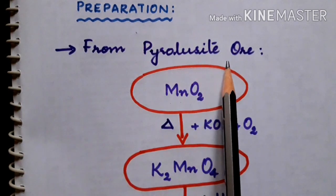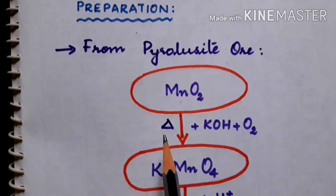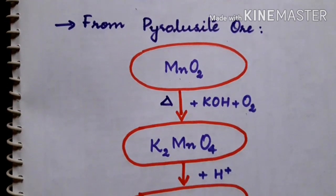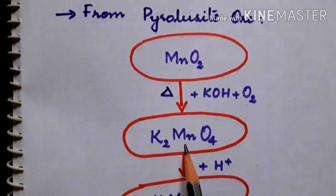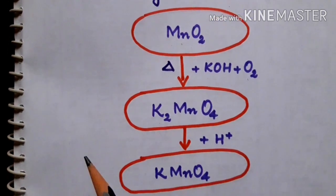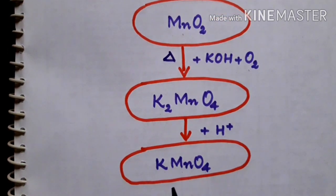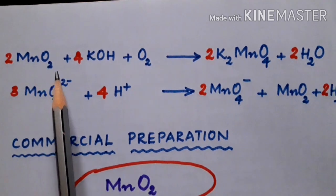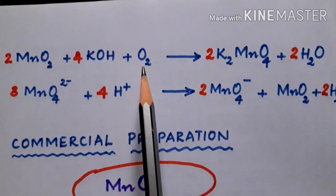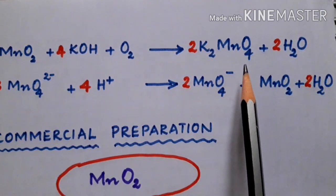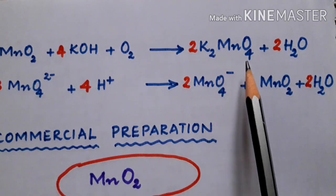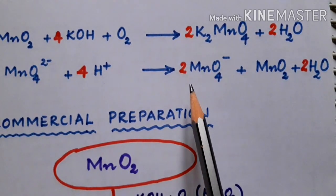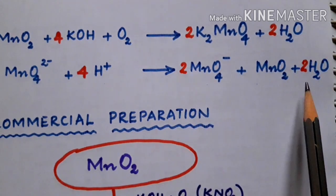Potassium permanganate is prepared from pyrolusite ore, which is MnO2. On fusing MnO2 with potassium hydroxide in the presence of air, it is converted to green colored potassium manganate with the formula K2MnO4, which on acidification undergoes disproportionation to form potassium permanganate, manganese dioxide, and water.